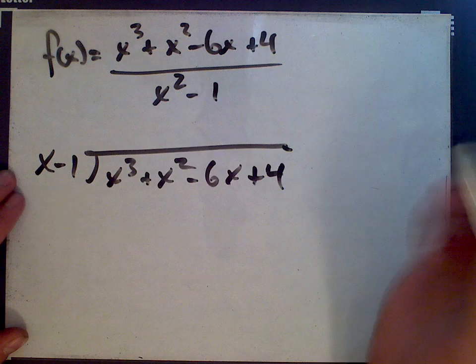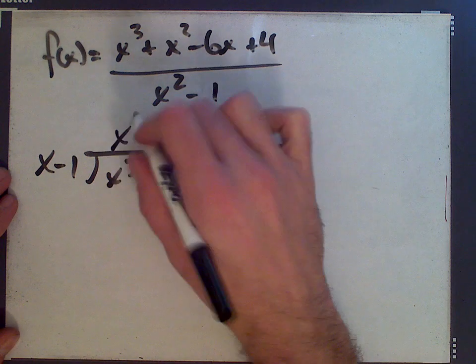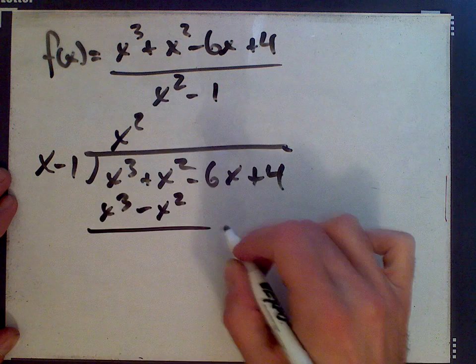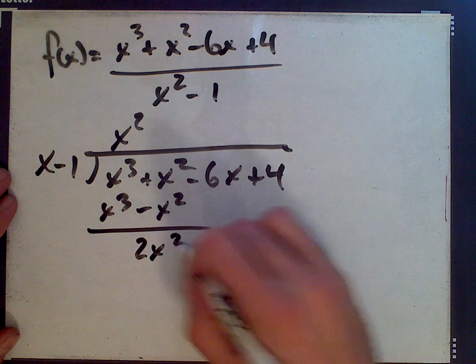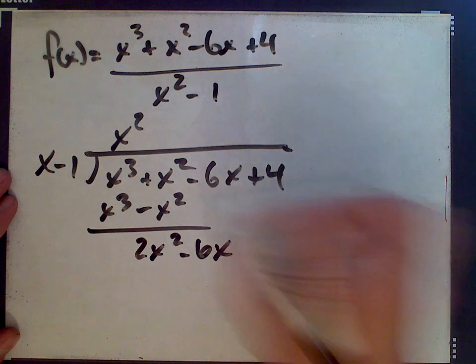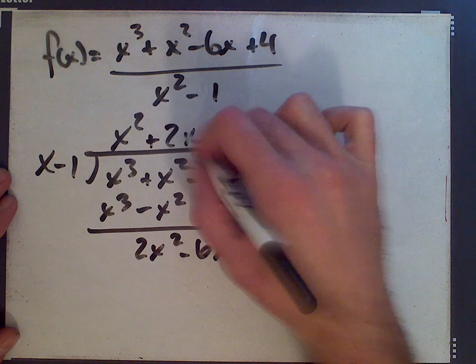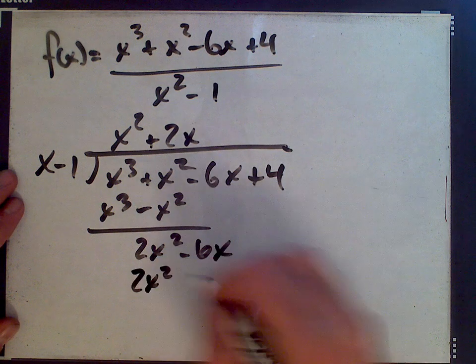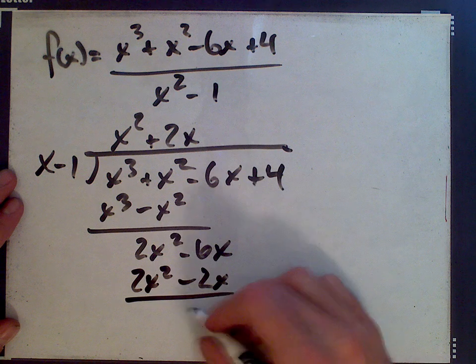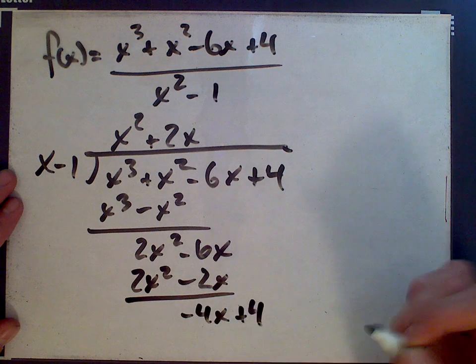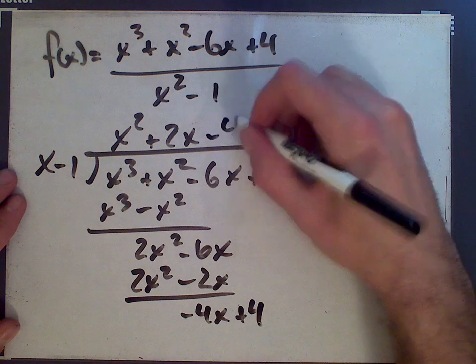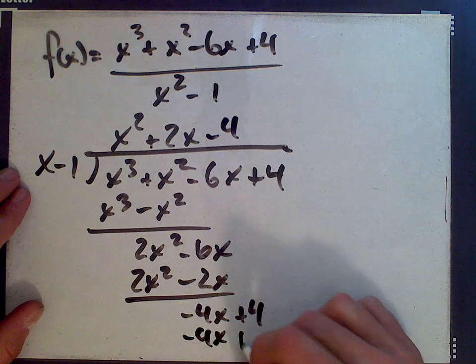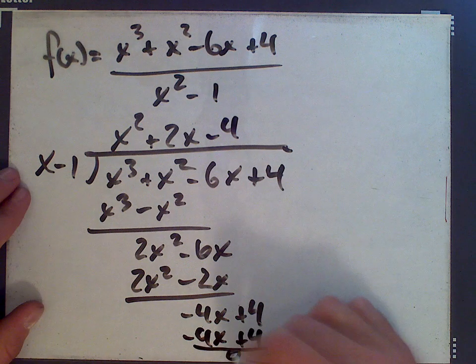So this is polynomial division, x squared minus x squared. We get 2x squared after we subtract, so we need a 2x here. We get 2x squared minus 2x. This leaves negative 4x, and we need a negative 4. And we see that we factored it. So it leaves a remainder of 0.